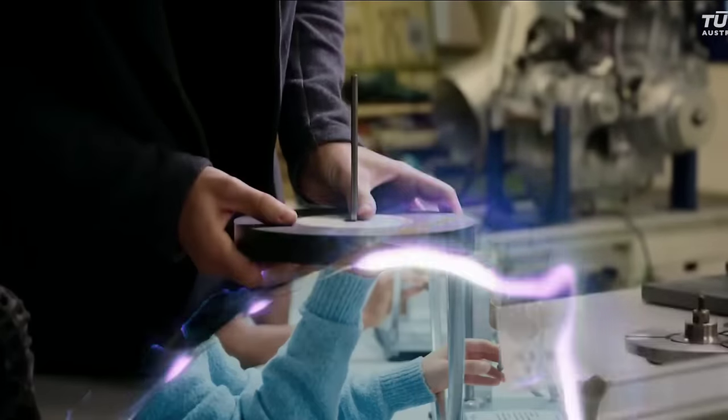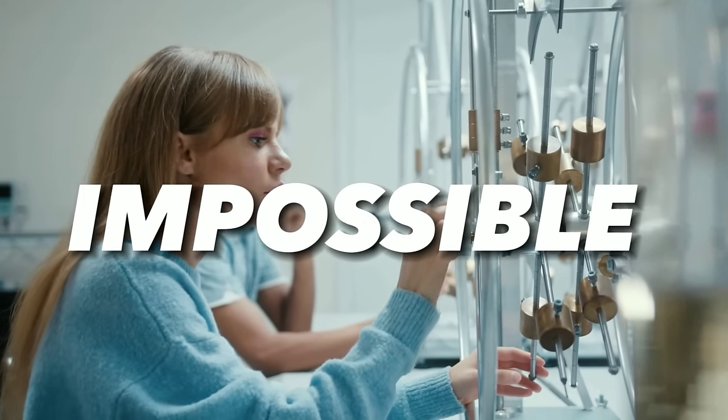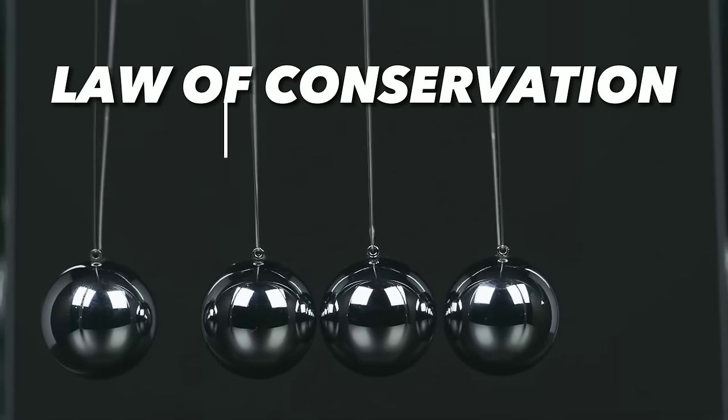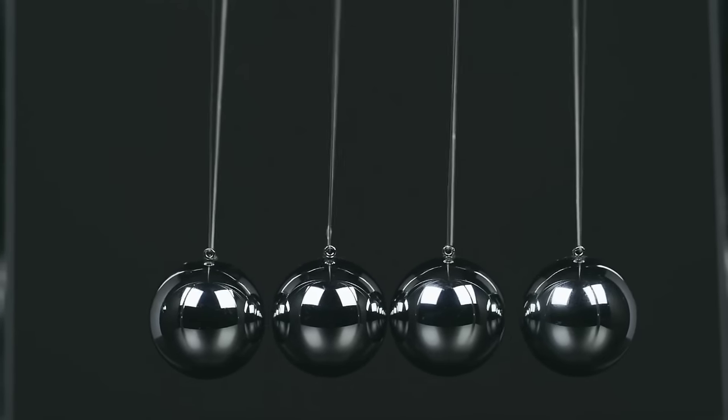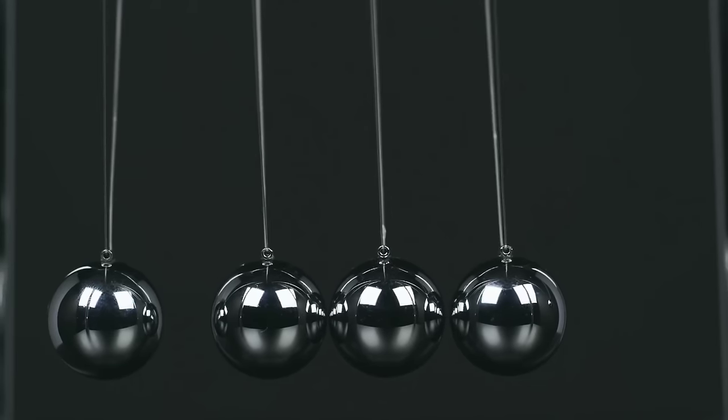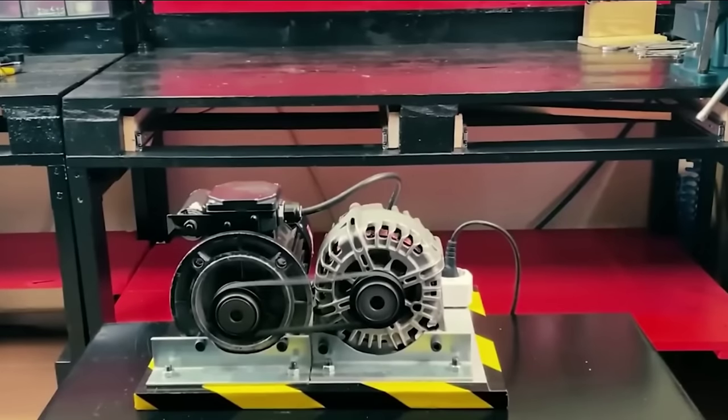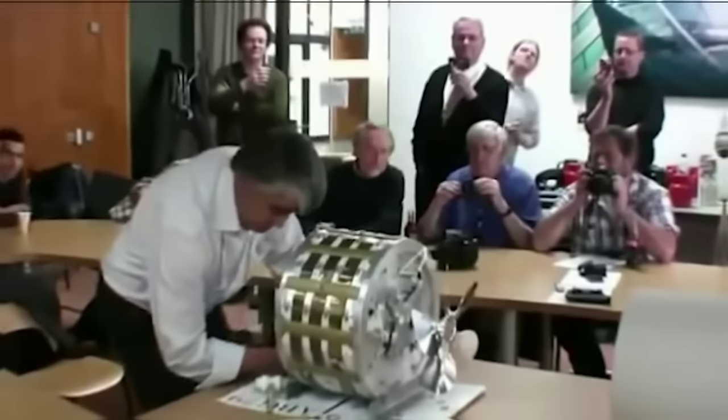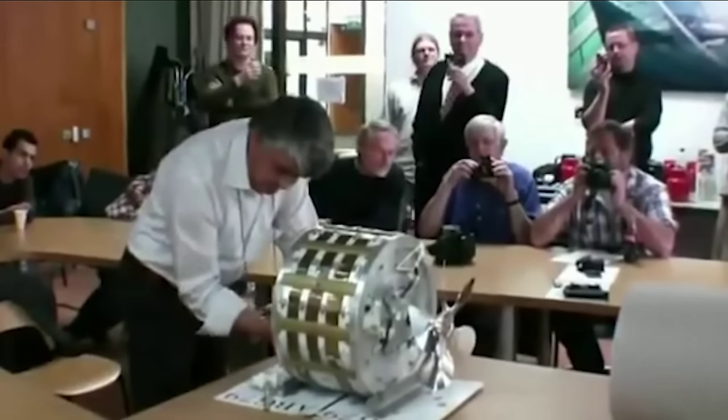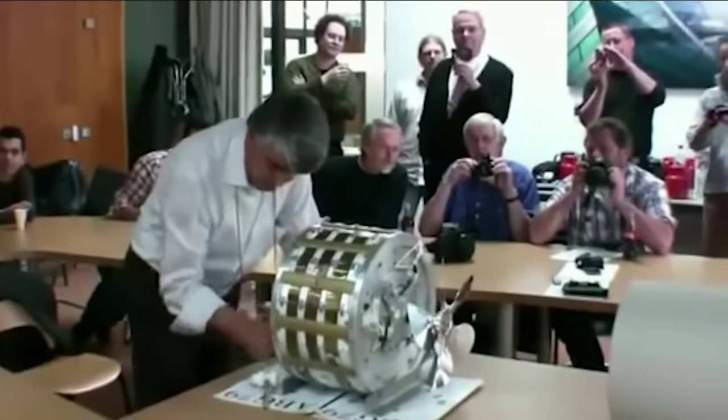According to the laws of physics, such a device is impossible. Why? Because it violates the law of conservation of energy. This law states that energy can neither be created nor destroyed, only transformed from one form to another. So if a magnet motor can produce electricity without using any external source of energy, then it means that it is creating energy out of nothing, which is impossible.